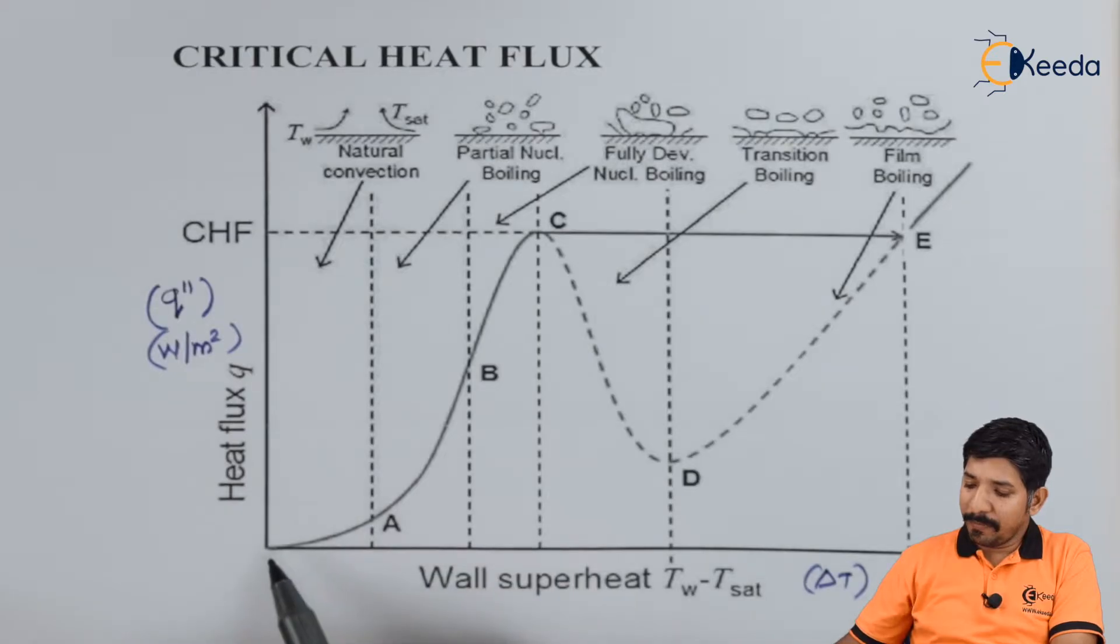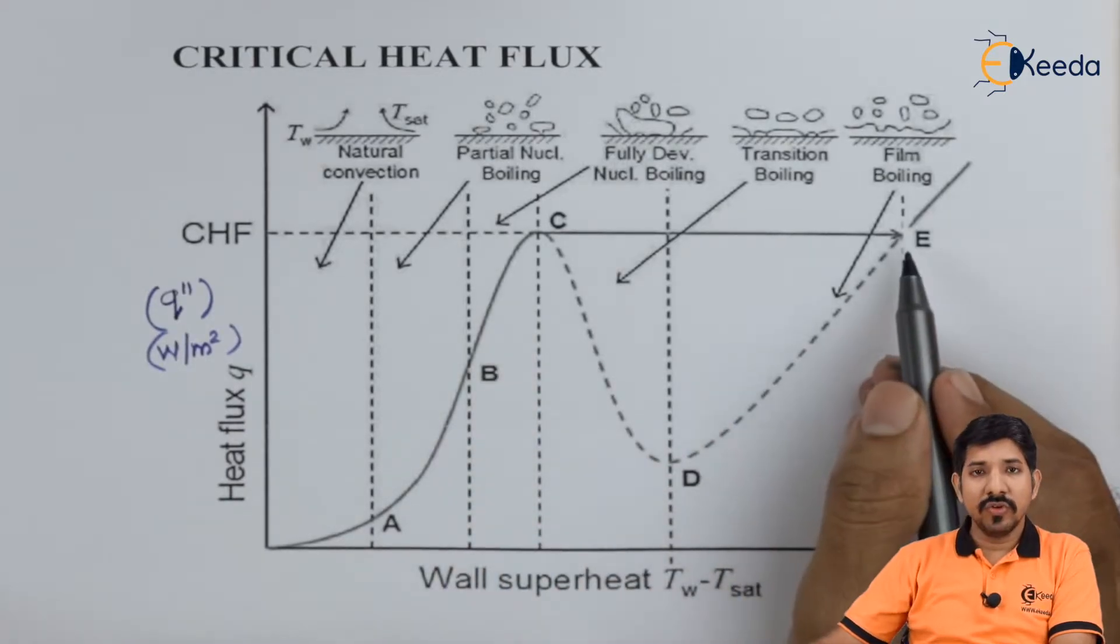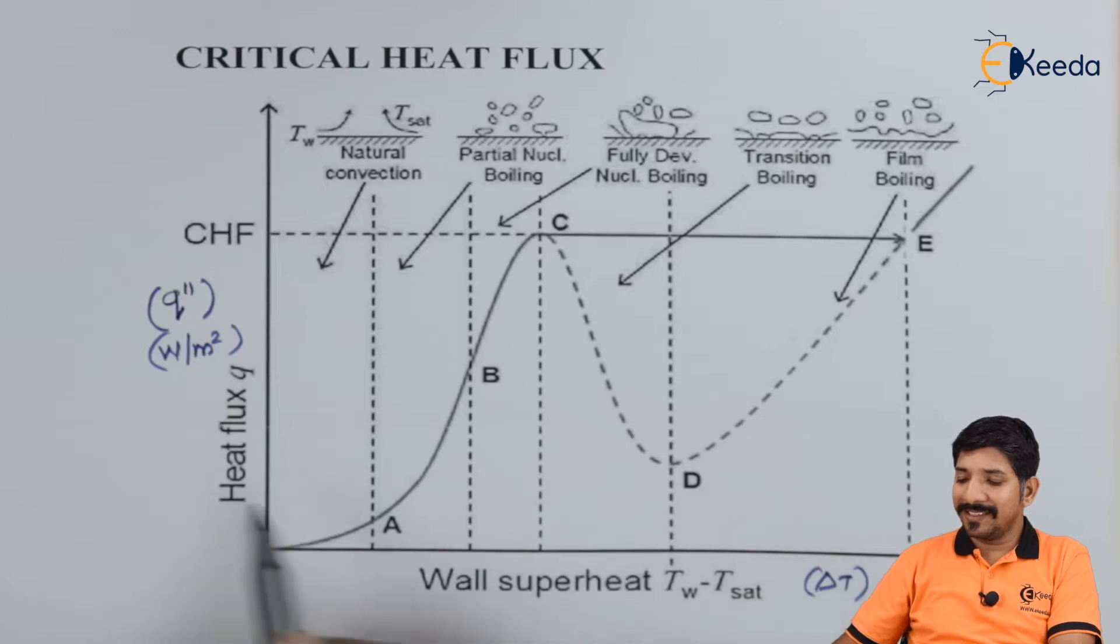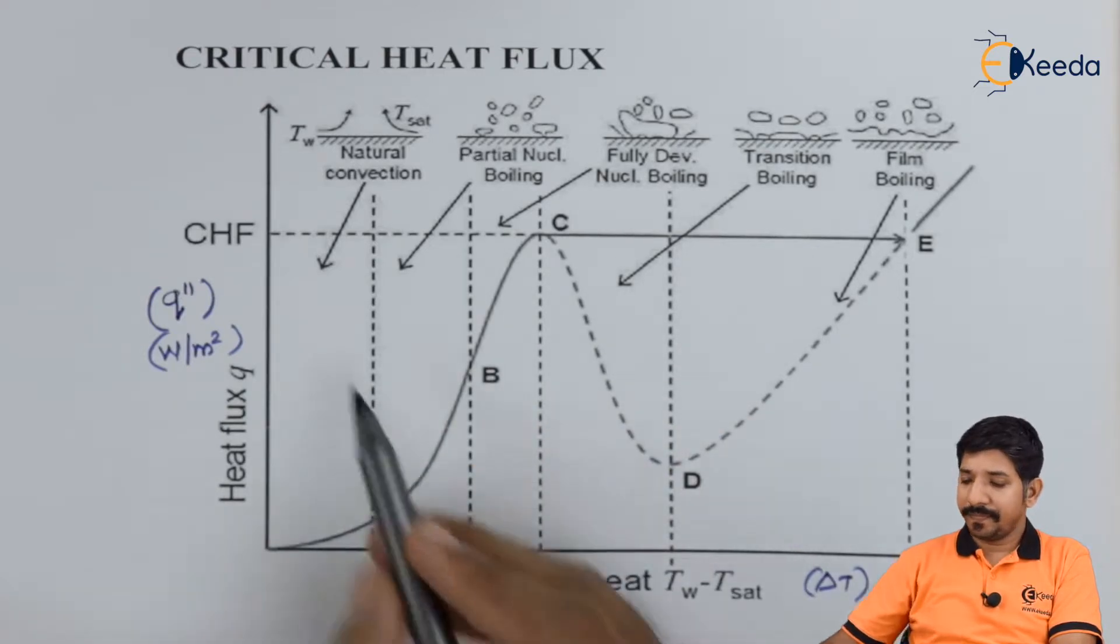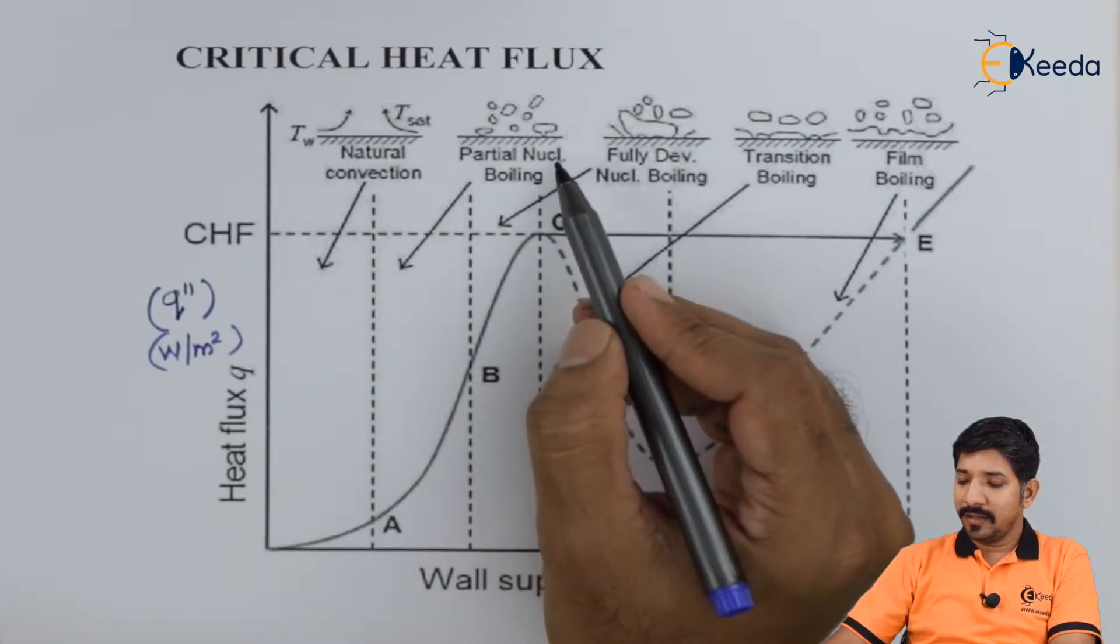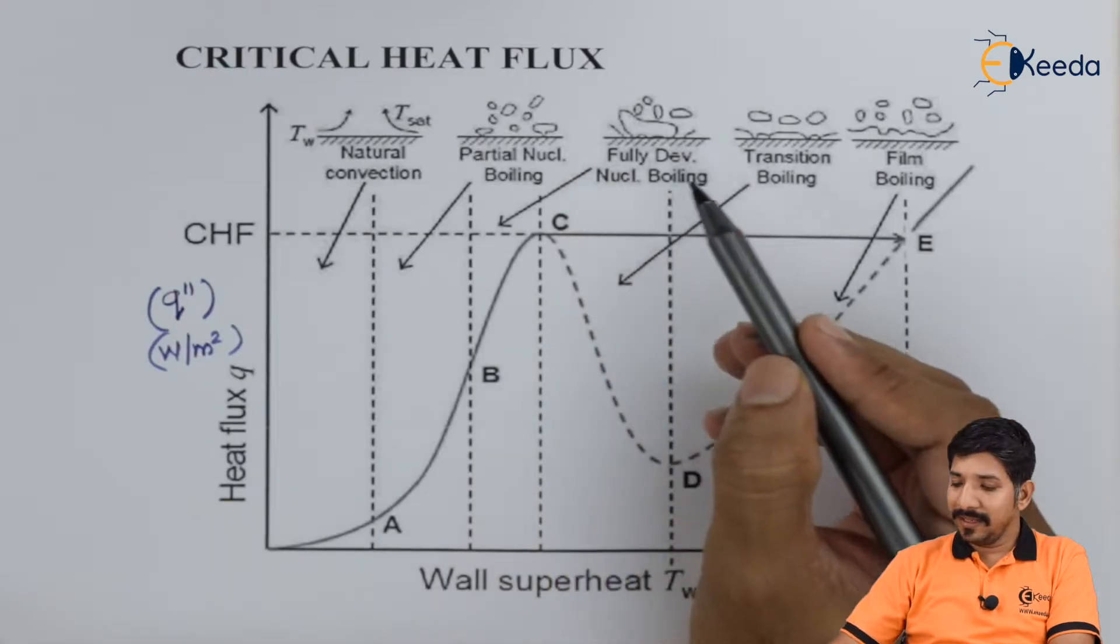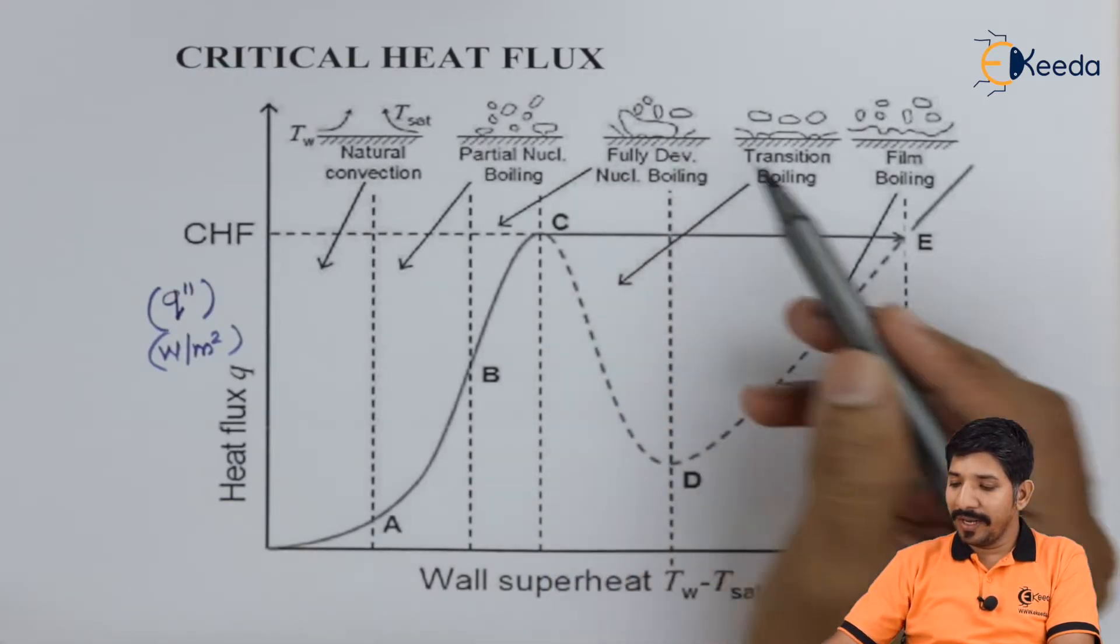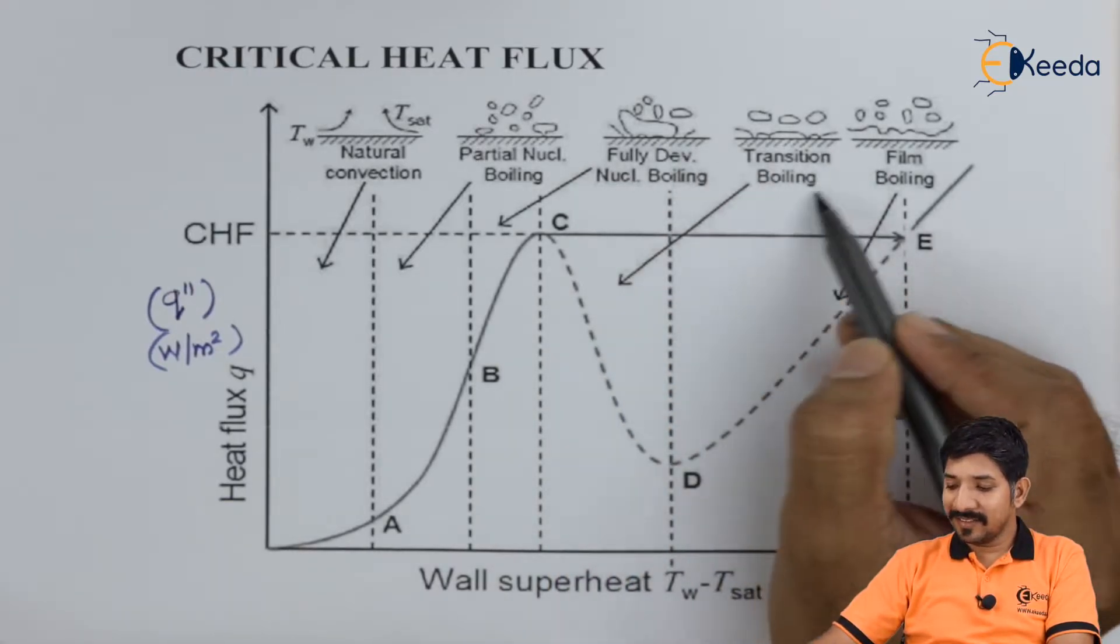If I start plotting the graph, it looks something like this. We have seen the various regimes that are formed in this chapter. The first is natural convection, then partial nucleate boiling, then fully developed nucleate boiling, then transition boiling, and then film boiling.